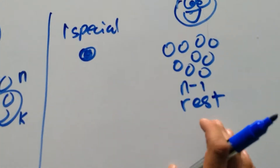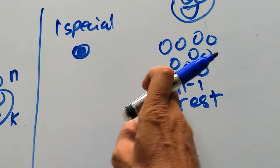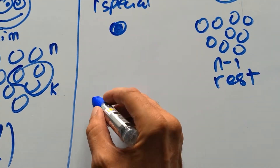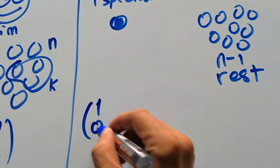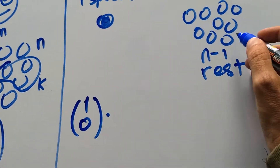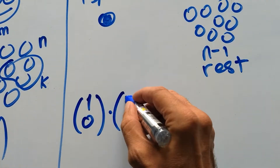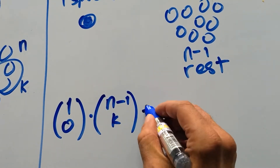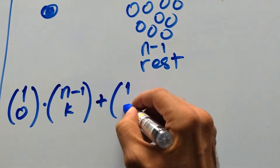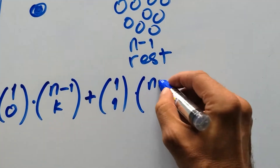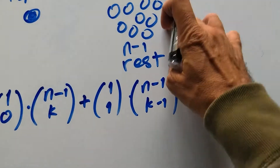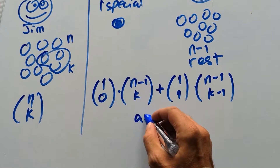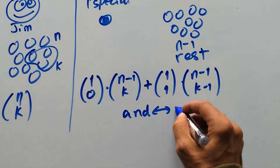So now we have different options. We can choose one from the special object or none from it, and the rest from the rest, and so on. I can choose nothing from the special object, and then I have to choose all K from the rest — that's N minus 1 choose K. Or I can choose 1 from the special object, and choose K minus 1 from the rest.